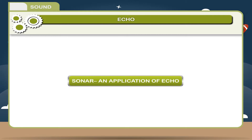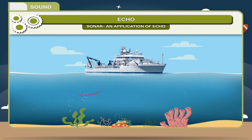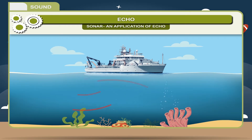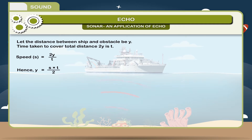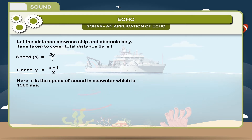Sonar — An Application of Echo: The property of reflection of sound is utilized in sonar (sound navigation and ranging), which produces and receives ultrasonic waves after reflection from an obstacle. It is used in ships, submarines, etc. to measure the depth of the sea. Let the distance between the ship and obstacle be y, and the time taken to cover total distance 2y be t. Speed s = 2y/t, hence y = (s × t) / 2, where s is the speed of sound in seawater, which is 1560 meters per second.